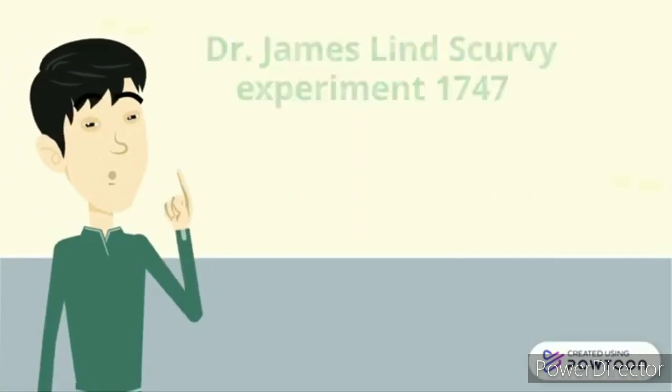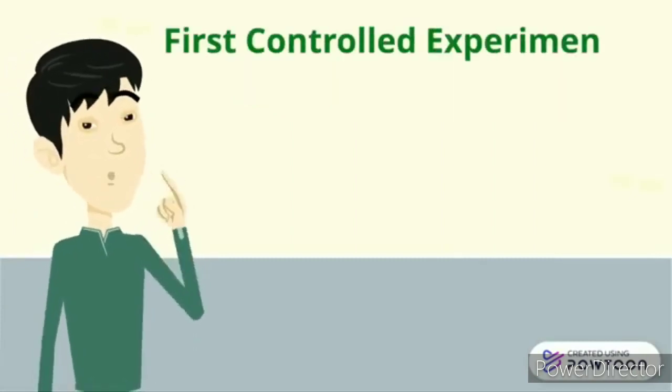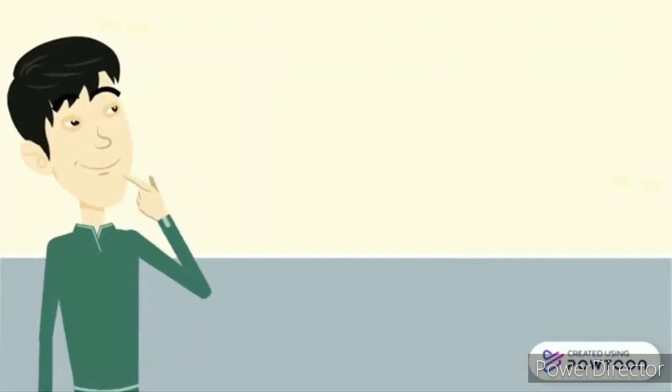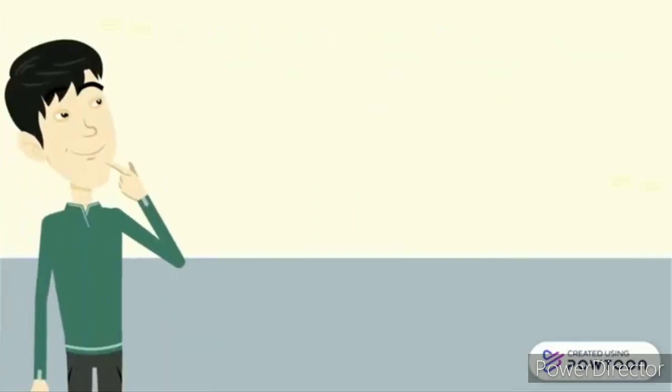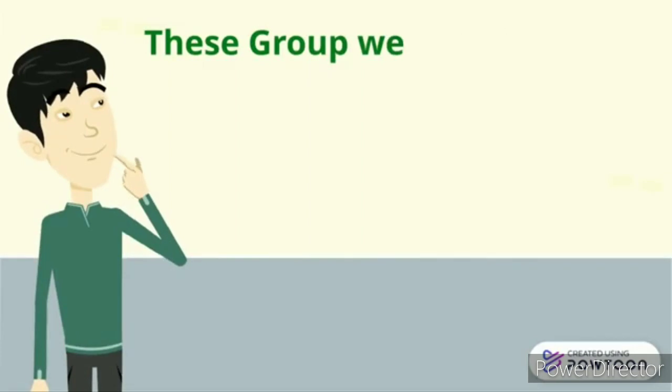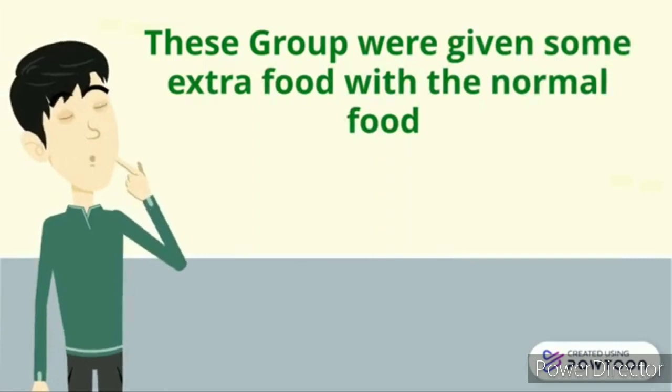This experiment was the very first controlled experiment of the modern era, wherein he took 12 sailors and divided them into six groups. Each group contained two sailors with the same problem. With their normal food, he gave some extra food for a day or twice or thrice a day to the groups.